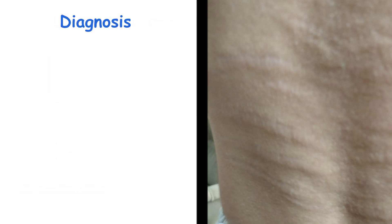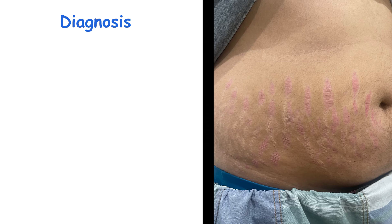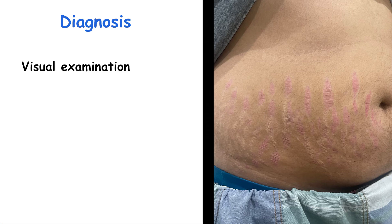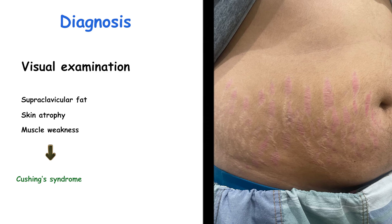The diagnosis of stria distensae is usually made upon visual examination of linear atrophic marks in susceptible sites like the buttocks, thighs, and breasts. Patients with associated symptoms may require further evaluation to rule out underlying disease. For example, stria distensae along with supraclavicular fat pads, skin atrophy, and proximal muscle weakness suggest Cushing's syndrome. Stria distensae in a tall patient with aortic abnormalities should raise suspicion for Marfan syndrome.